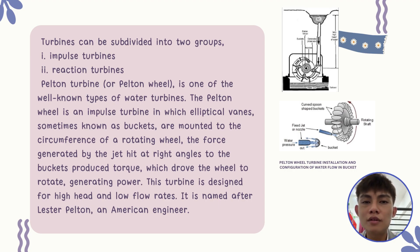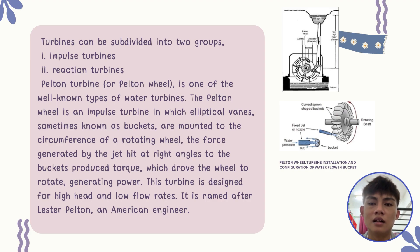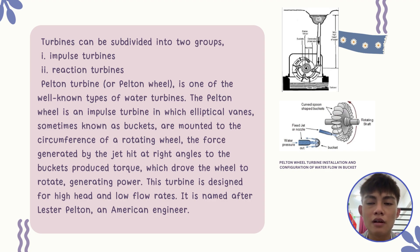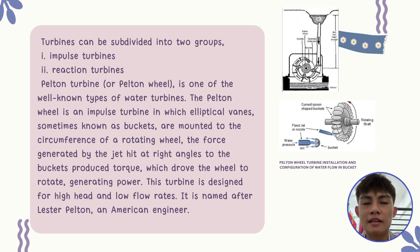When the wheel rotates, it generates power. This turbine is designed for high head and low flow rates. It is named after Lester Pelton, an American engineer. As we can see clearly in the diagram, the Pelton Turbine installation shows the configuration of the water flow in the bucket. The structure has curved spoon-shaped buckets; when rotating, they produce the torque which causes the wheel to rotate and generate power.